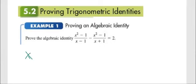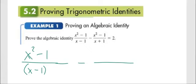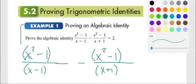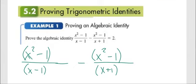So we have x squared minus 1 over x minus 1, minus x squared minus 1 over x plus 1. And just for fun, I'm going to put some parentheses around that stuff up there. I bet we need common denominators, don't we? All right, so it equals 2 over 1.